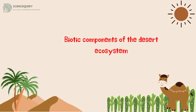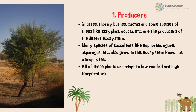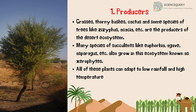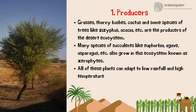Now let's see what are the biotic components of the desert ecosystem. The first biotic component are the producers. Grasses, thorny bushes, cactus, and some species of trees like Ziziphus, acacia, etc. are the producers of the desert ecosystem. Many species of succulents like euphorbia, asparagus, etc. also grow in this ecosystem, known as xerophytes.